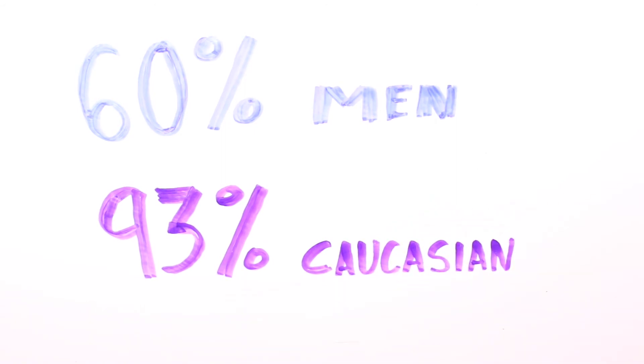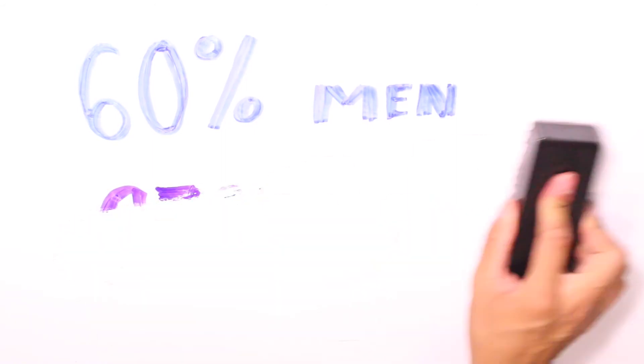Although most people are diagnosed with ALS between the ages of 40 and 70, people in their 20s and 30s can still develop the disease.